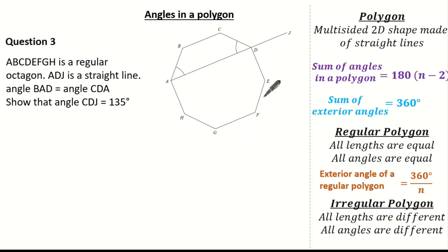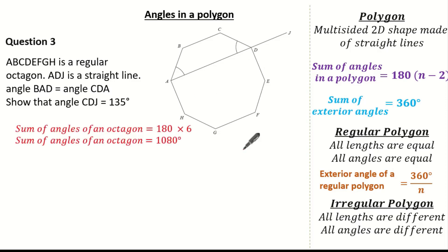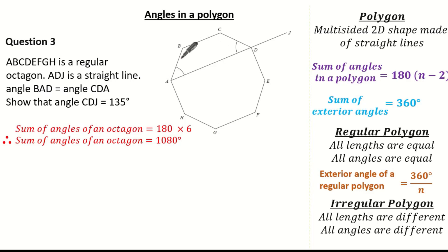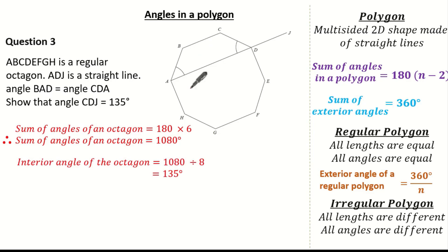Firstly let's identify the sum of all the angles in our octagon. To work out the sum of angles of an octagon it's simply 180 multiplied by (8 subtract 2), so it's 180 times 6 which is 1080 degrees. Since it's a regular octagon, I divide 1080 by 8 giving me 135 degrees — so each interior angle of our octagon is 135 degrees.